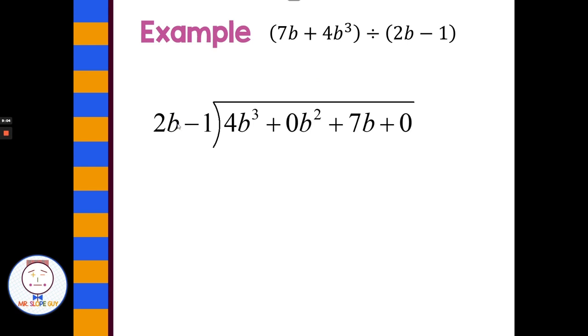I can do what times 2b is 4b to the third? It's 2b squared. 2b squared times 2b, 2b squared times negative b, gives negative 2b squared. Switch my signs, add, bring down the 7b. What times 2b is 2b squared? Positive b. And notice how all my b squared terms are lining up, all my b terms are lining up. So all my place values are nice and pretty. b times 2b is 2b squared.